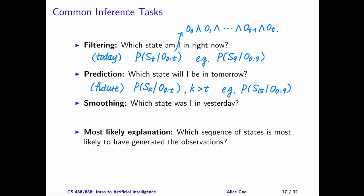Mathematically, given the observations from day 0 to day t, we want to calculate the posterior distribution over the state on day k, where k is greater than t.